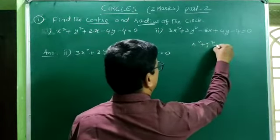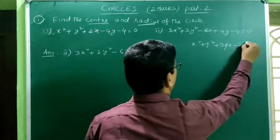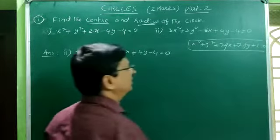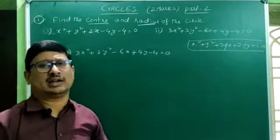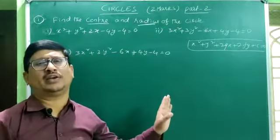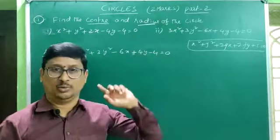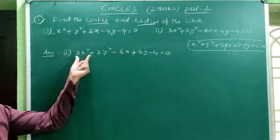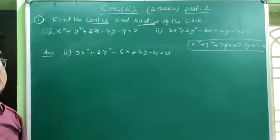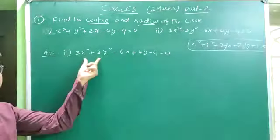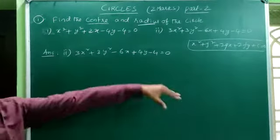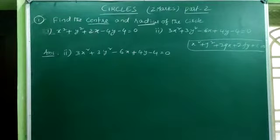The general form of the circle equation is x² + y² + 2gx + 2fy + c = 0. In the general form, the coefficients of x² and y² should both equal 1. In the given equation, the x² and y² coefficients are 3, so we need to convert it into general form by dividing the whole equation by 3.